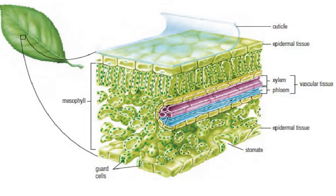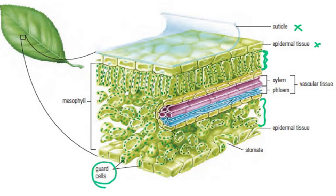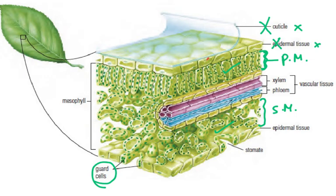An important point is where chloroplasts are present. There are no chloroplasts in the cuticle and no chloroplasts in the upper or lower epidermis. Chloroplasts are found in the palisade mesophyll cells, the spongy mesophyll cells, and in the guard cells.